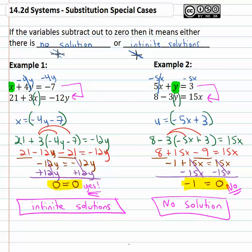So as we're solving, we're careful of these special cases. They don't happen often, but when they do, if the variable subtracts out, then it means there is either no solution or infinite solutions.